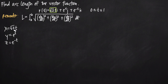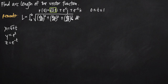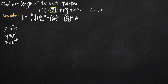When we had parametric equations before and were looking to find arc length, the formula looked exactly like this one except it left out the dz over dt squared term. Everything else is exactly the same. So all we need to do is find the derivatives of each parametric equation and plug them into our arc length formula.